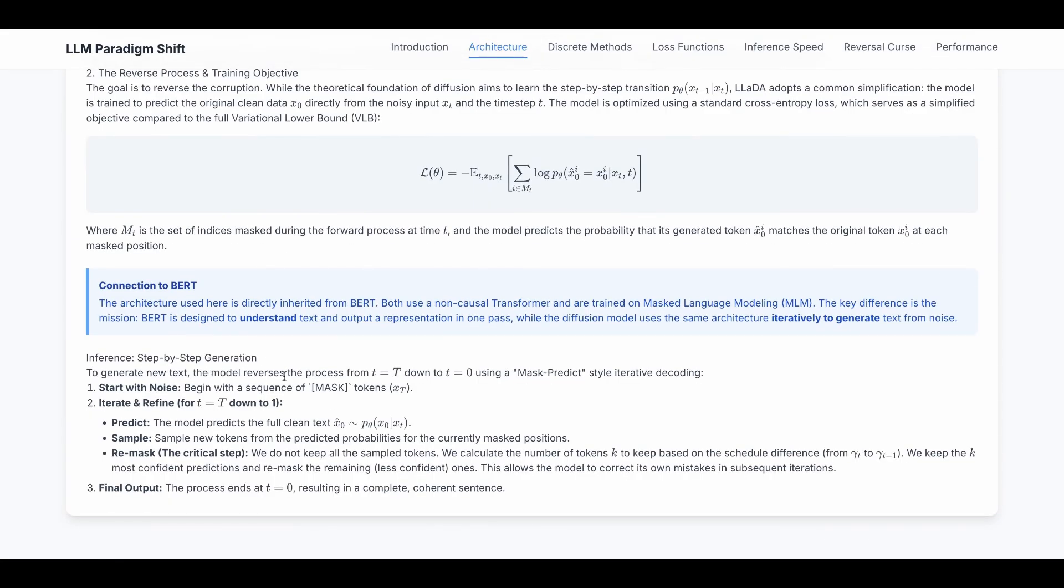All right, back to the DLM. When we do inference to generate a new text, the model reverses the process from t to big T down to zero using a mask predict style. So it starts with pure noise. Begin with a sequence of mask tokens xT, and then we iterate and refine for T steps from big T down to one.